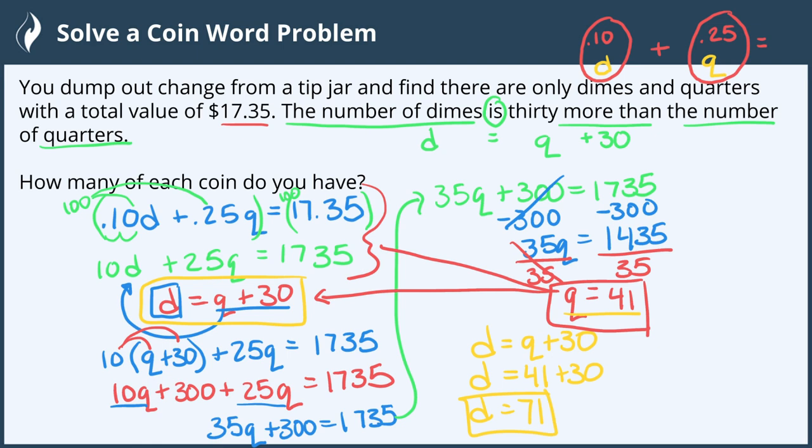This means that we have 41 quarters and 71 dimes. And we're all done.